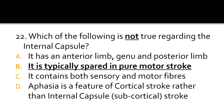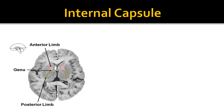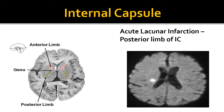B is not true — the other three are true. Pure motor stroke results from damage to the posterior limb of the internal capsule due to a lacunar infarct. This picture shows the different parts of the internal capsule: the anterior limb lies between the head of the caudate nucleus medially and the lentiform nucleus laterally, while the posterior limb lies between the thalamus medially and the lentiform nucleus laterally. A scan shows an acute lacunar infarction involving the posterior limb, with likely presentation as a pure motor stroke.